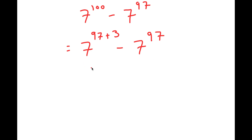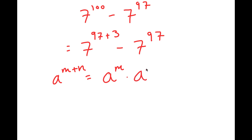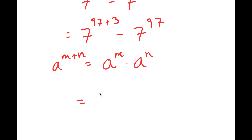Now, if I have something in the form a to the power of m plus n, this is equal to a to the power of m times a to the power of n. So 7 to the power of 97 plus 3 is going to equal 7 to the power of 97 times 7 to the power of 3. And I have this minus 7 to the power of 97.